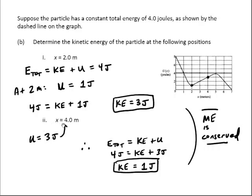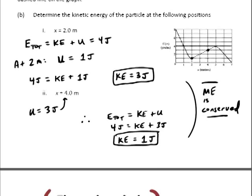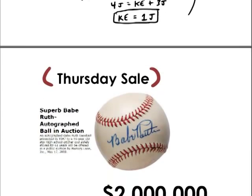For part ii, at x equals 4 meters, the potential energy is 3 joules, which means 3 joules plus what is 4 joules? Kinetic energy must be 1 joule. So all we're doing there is applying the law of conservation of energy. We know the total energy is 4 joules, we're given potential energies, and we just got to add them up to equal 4 joules.